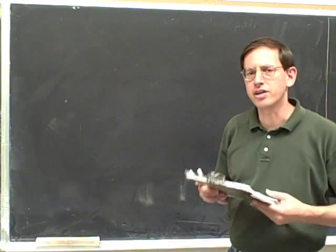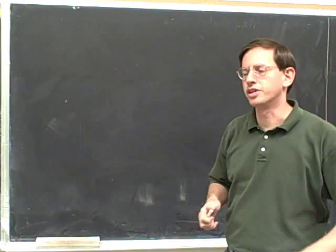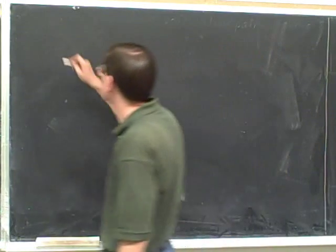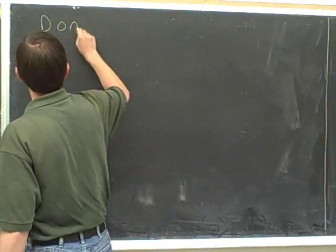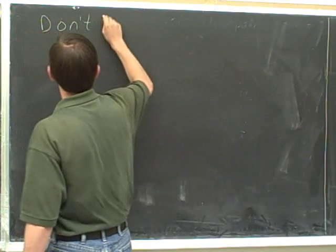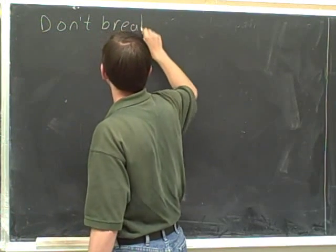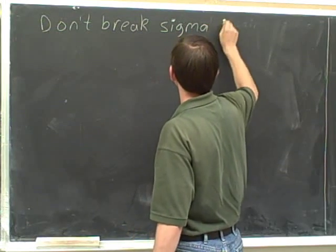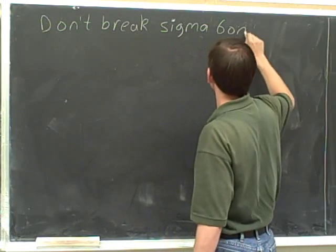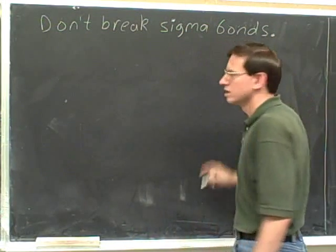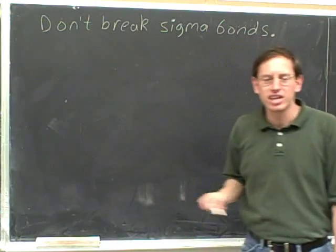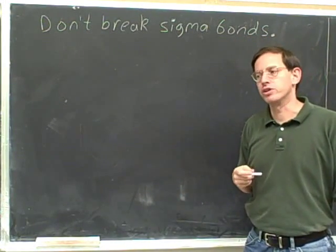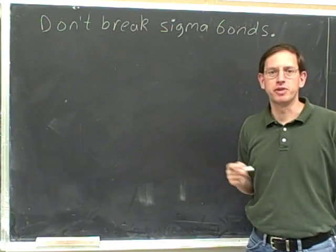Let's go over another rule for determining whether your resonance arrows are legal or not: don't break sigma bonds! You're not allowed to break sigma bonds when you're drawing your electron-pushing arrows for resonance.